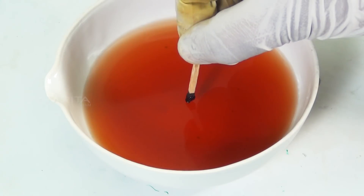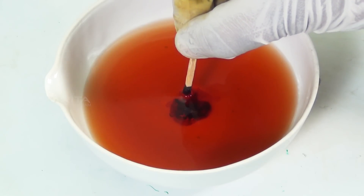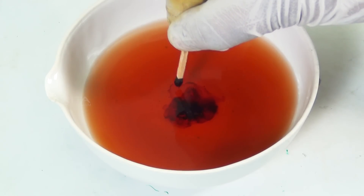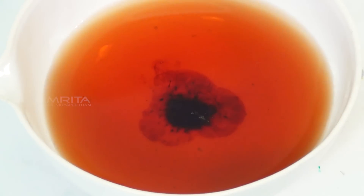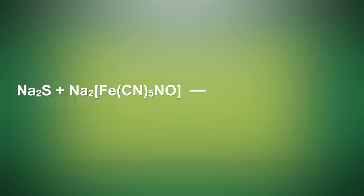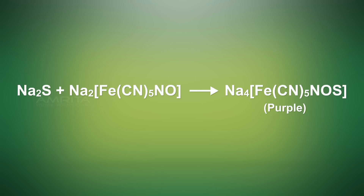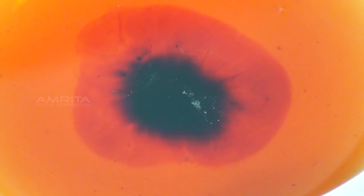Now, dip the fused mass into sodium nitroproside solution taken in the china dish. Sodium sulphide reacts with sodium nitroproside to form a purple coloured iron complex which appears as violet streaks.